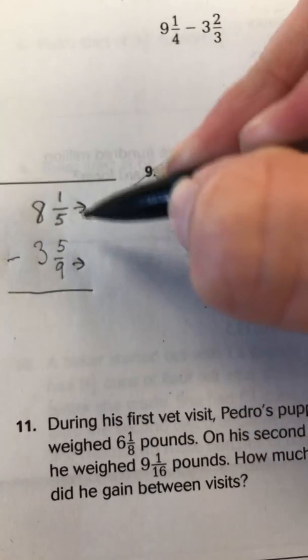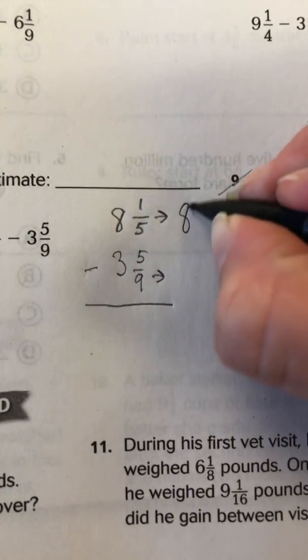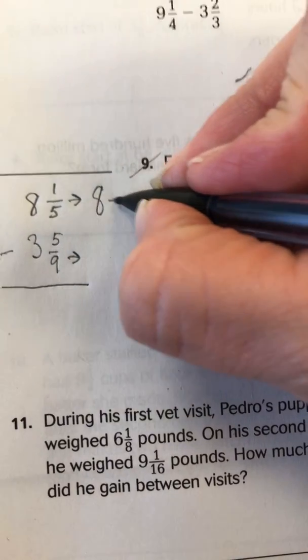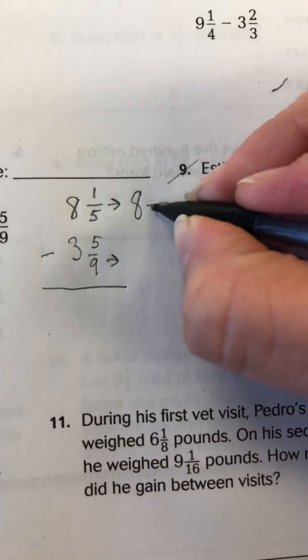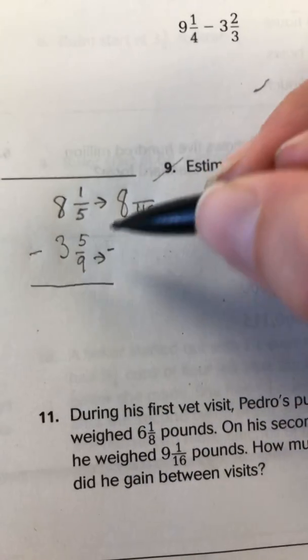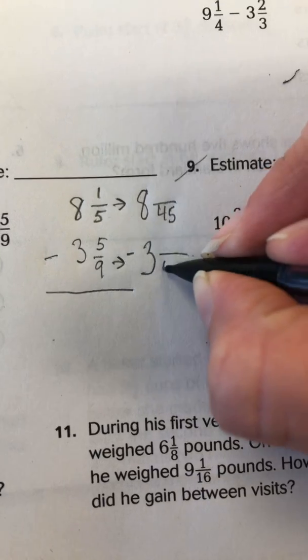So I draw my little arrows and then I say, okay, let's bring this over. The 8 is going to stay the same. We know 8 and 1/5 is going to change to 8 and something over 45. Minus. And 3 and 5/9 will change to 3 and something over 45.